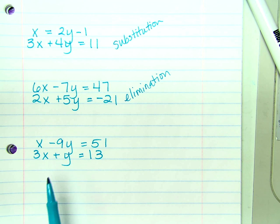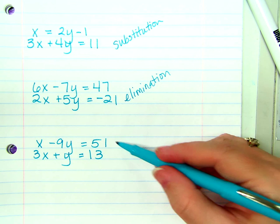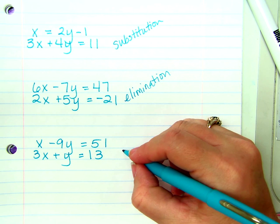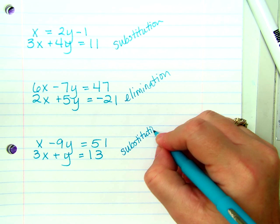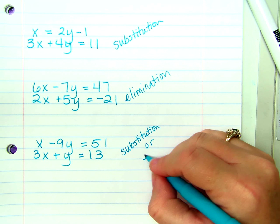So, I could solve either one of those quite simply to perform substitution. Or, I have a positive 1 and a negative 9, which would make this very easy to do elimination. So, this truly would be personal preference. Do you like substitution better? Or, do you like elimination better?